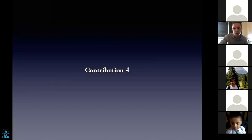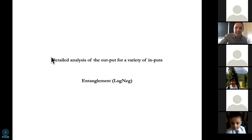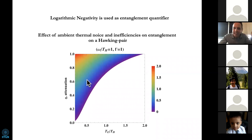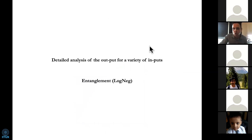Contribution four — the last one. We have done a detailed analysis of the output signal for different inputs. We were wondering: entanglement gets degraded by noise and inefficiencies — is there a way to revive the entanglement? Is there a way to amplify the entanglement so that losses are compensated? And the answer is yes, if we choose appropriate inputs — if we stimulate the process with appropriate inputs.